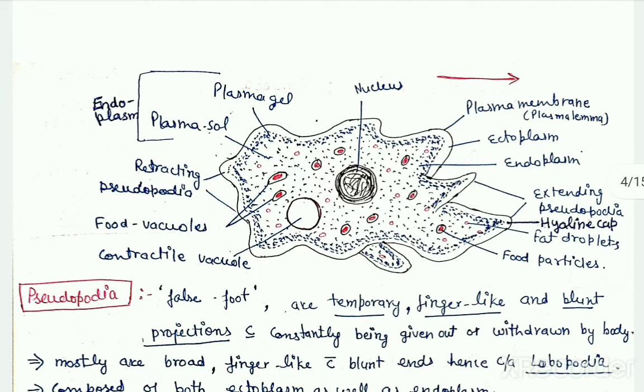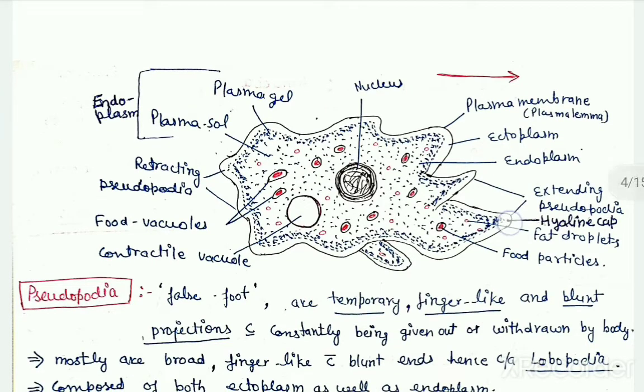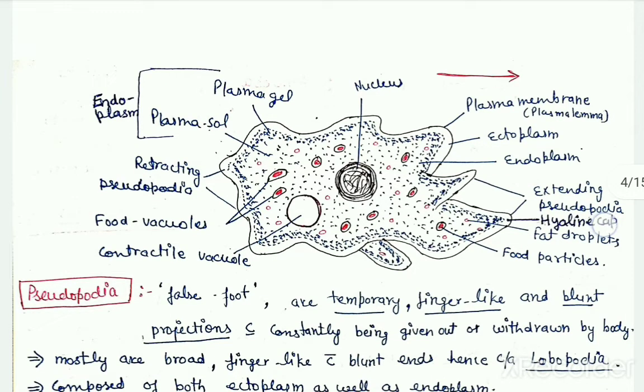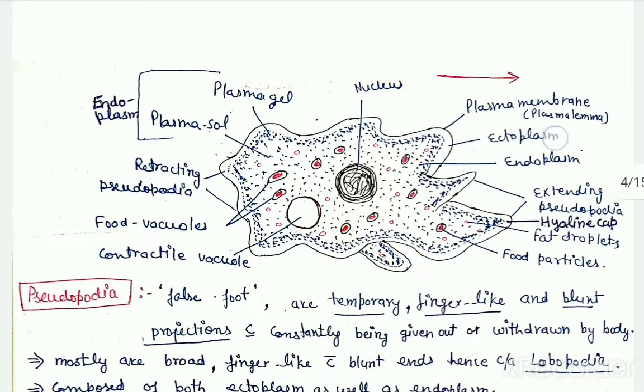The ectoplasm at the very tip of each pseudopodium is comparatively thicker, and this thick part of ectoplasm is termed hyaline cap. Such pseudopodia which are blunt and have both ecto and endoplasm are termed lobopodia.